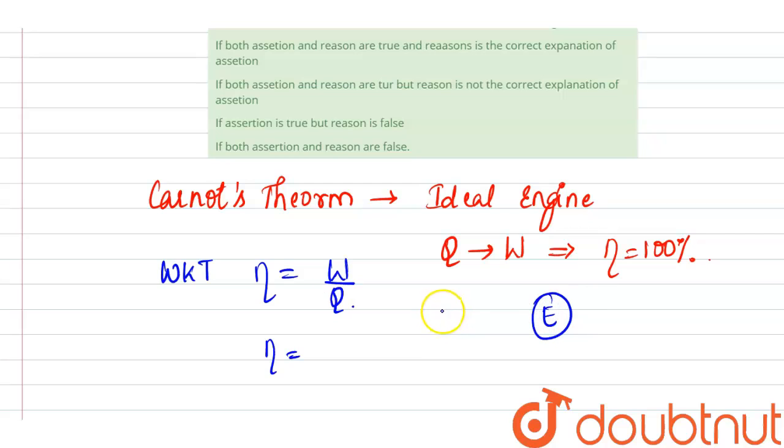So this is our source at higher temperature T1. This is a sink at lower temperature T2. This is source. This is sink.